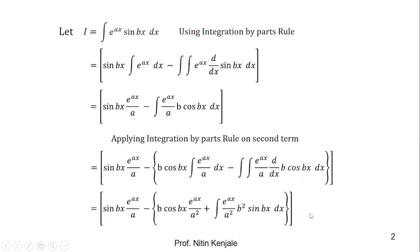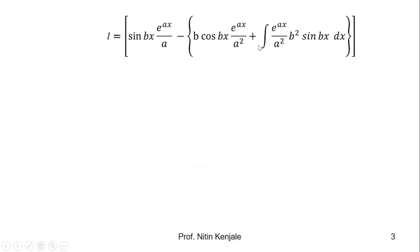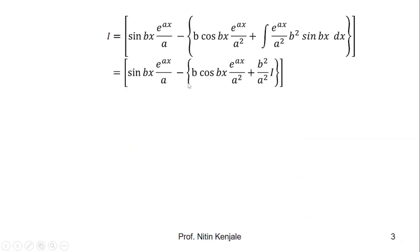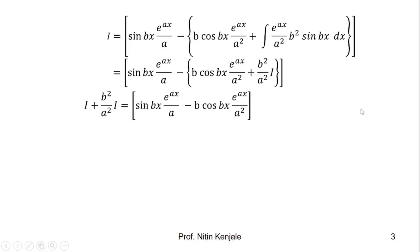Carrying this step forward to the next slide: we have sin(bx)·e raised to ax upon a as it is, and b·cos(bx)·e raised to ax upon a squared as it is. Recalling that we defined the integration of e raised to ax times sin(bx) dx as I, we replace this integral by the variable I with b squared upon a squared as its coefficient. Opening the bracket, taking minus b squared upon a squared to the other side gives us I plus (b squared upon a squared)·I is equal to sin(bx)·e raised to ax upon a minus b·cos(bx)·e raised to ax upon a squared.